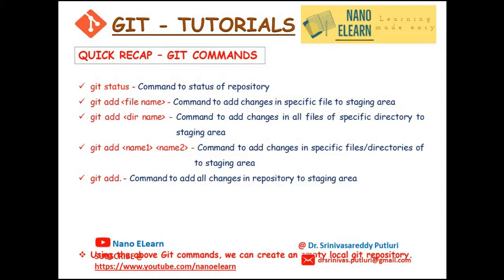A quick recap on the git commands discussed: git status — used to know the status of the repository. git add followed by file name — adds changes in a specific file to the staging area. git add directory name — adds changes in all files of a specific directory to the staging area. git add directory1 followed by directory2 — adds changes in specific files or directories. git add dot — adds all changes in the repository to the staging area.